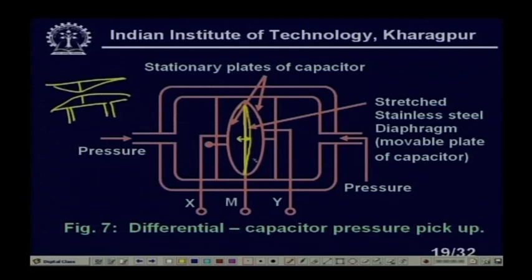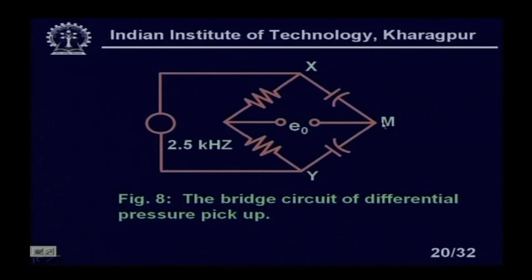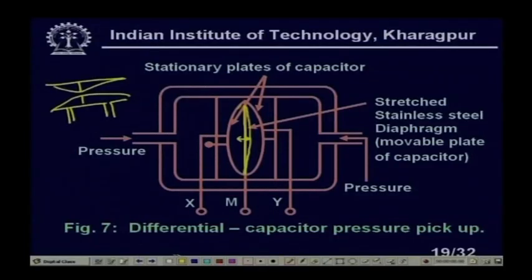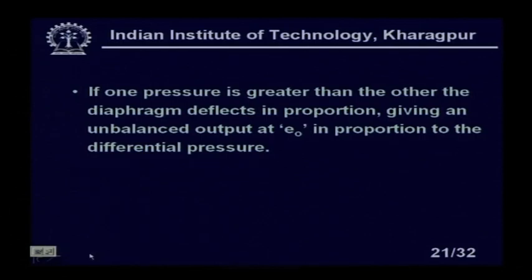The bridge circuit for the differential pressure pickup has X, Y, and M as the oval plates with two capacitors. If the diaphragm deflects in proportion to the pressure difference, it gives an unbalanced output E₀ proportional to the differential pressure. For the opposite pressure difference, E₀ shows a 180-degree phase difference. So it is difficult to determine the direction of deflection from the magnitude alone.